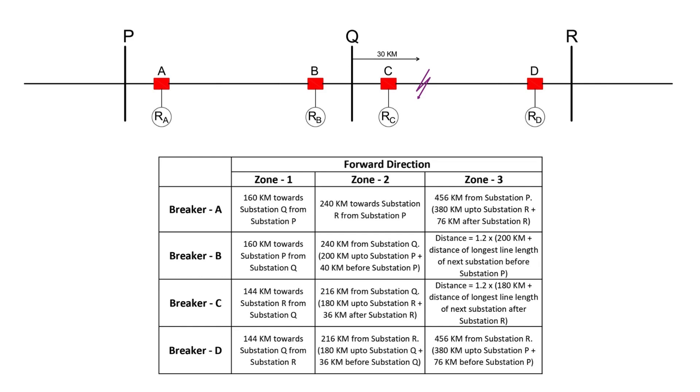Now, let's say there is a fault on the QR line located 30 kilometers from substation Q. Relay C will detect this as a zone 1 fault and trip immediately. Relay D will sense the fault as a zone 2 fault, but it won't trip immediately. Instead, relay C will send a direct trip signal to breaker D, ensuring it opens without delay.